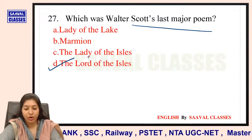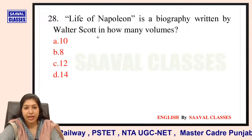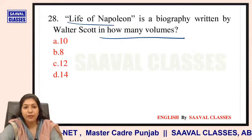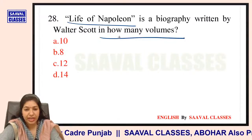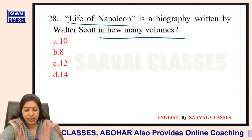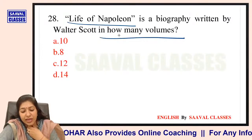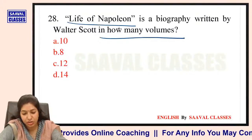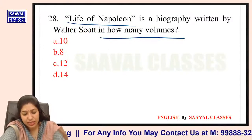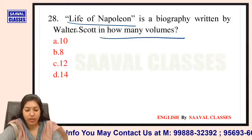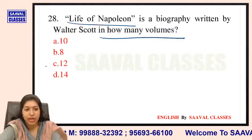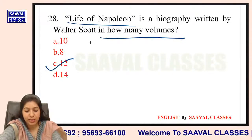Question number 28: Life of Napoleon is a biography written by Walter Scott — in how many volumes? Options are ten, eight, twelve. It was in twelve volumes.